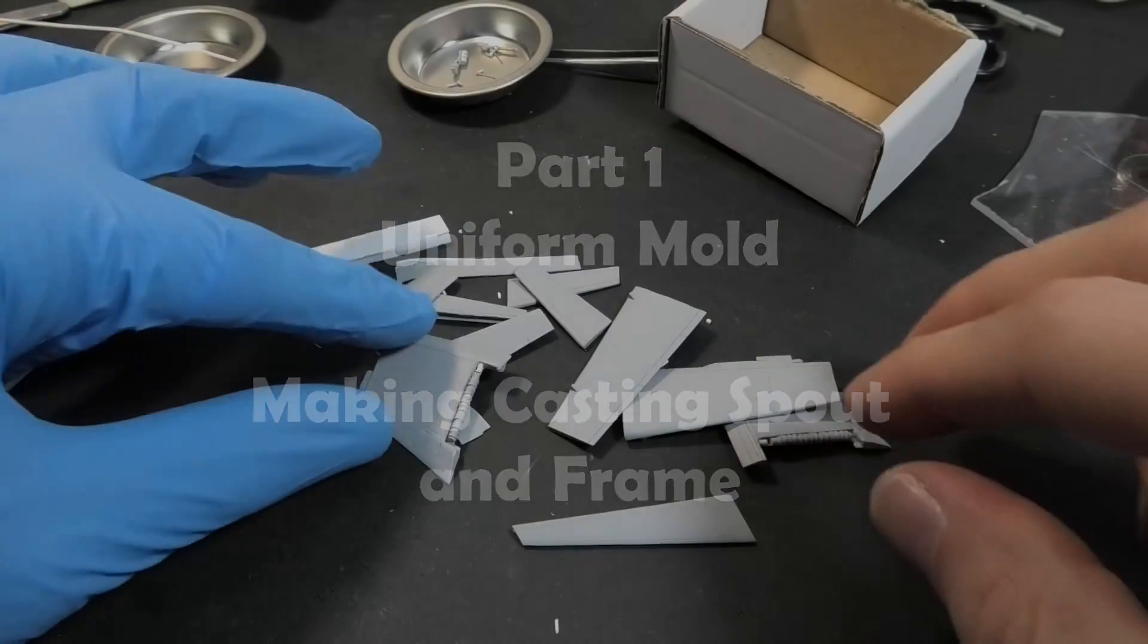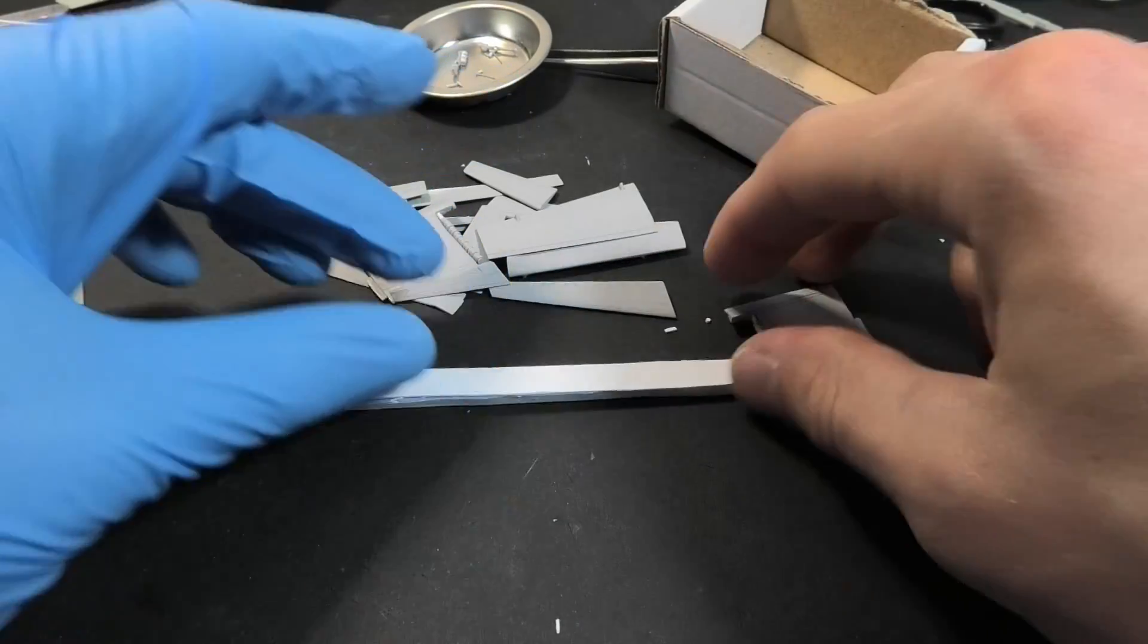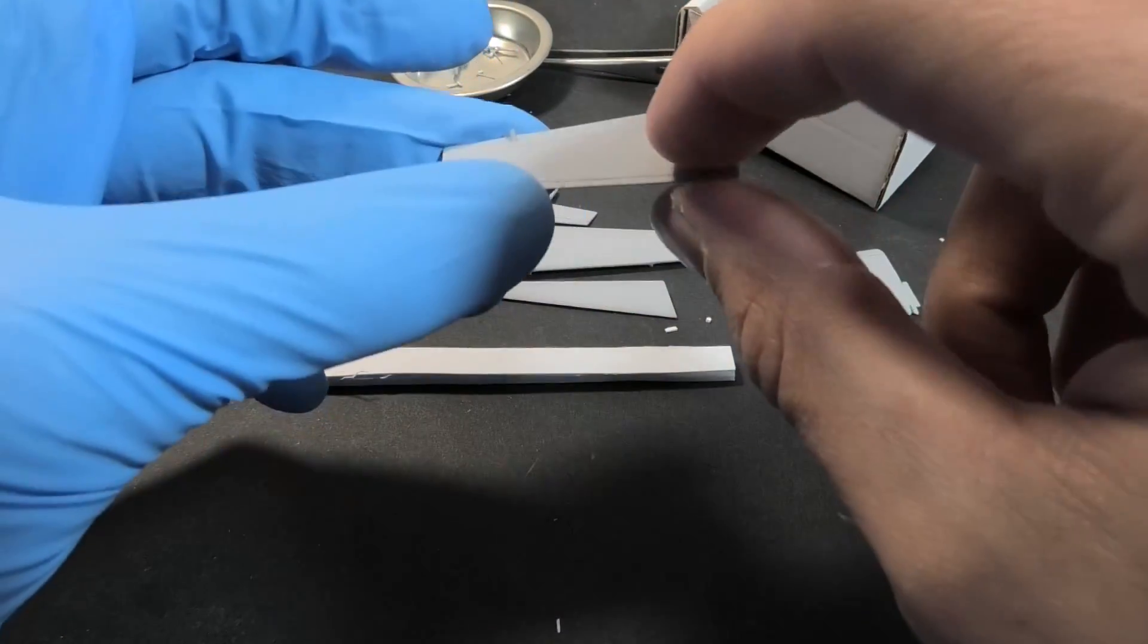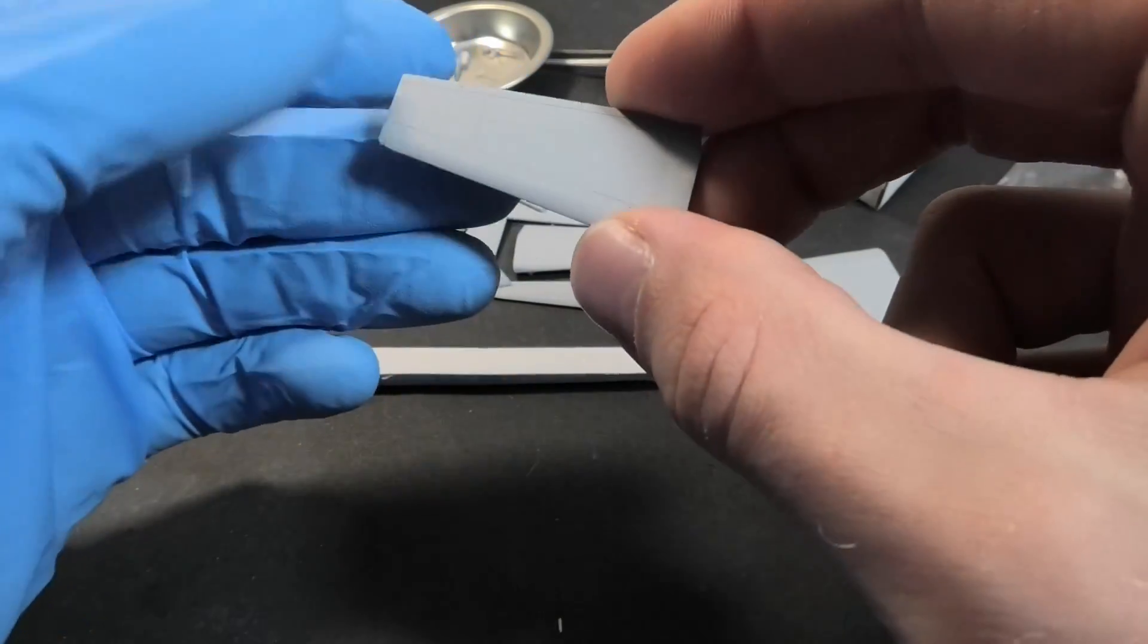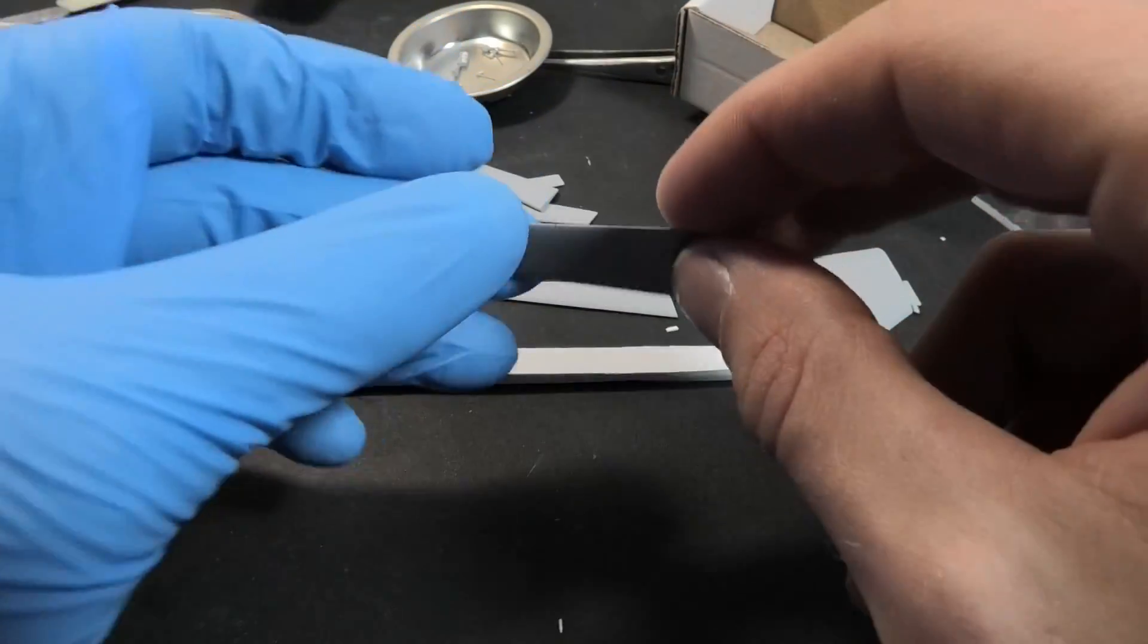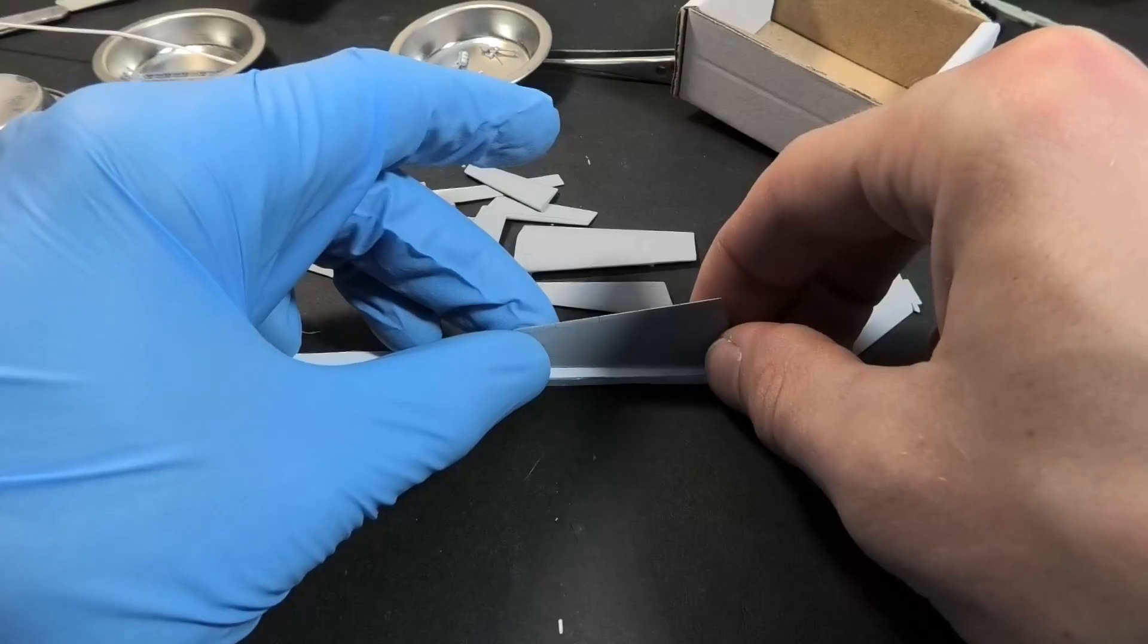First I'm going to show you how to make a simple one part mold. It is perfect for flat or not complex shapes. I recently made a conversion set for my model and I decided to duplicate all these plastic parts.